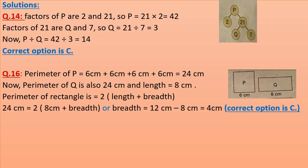See solutions for questions 14 and 16 here. Question 14: See the figure on the right side. Factors of P are 2 and 21, so the value of P is 21 × 2 = 42. Factors of 21 are Q and 7, so Q = 21 ÷ 7 = 3. Therefore P ÷ Q = 42 ÷ 3 = 14. The correct option is C.